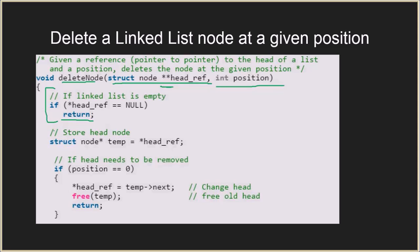We store the head node in the temp variable. Now if position is equal to zero, that means we have to delete the first node itself. We move the headRef pointer to the next of temp, then free temp. So we change the headRef pointer, free the memory used by the first node stored in temp, and return.